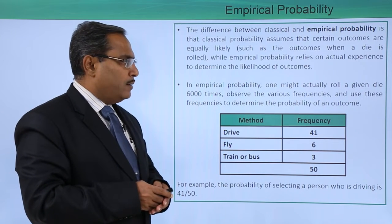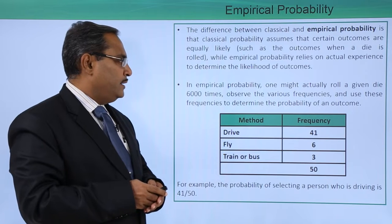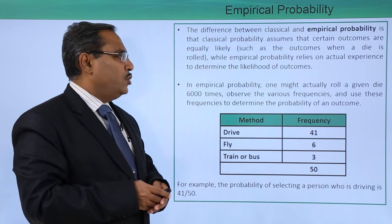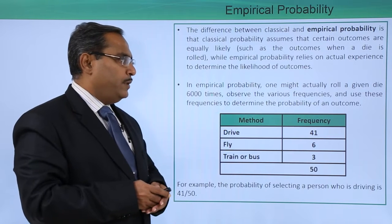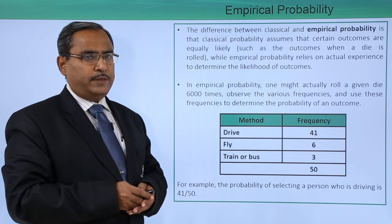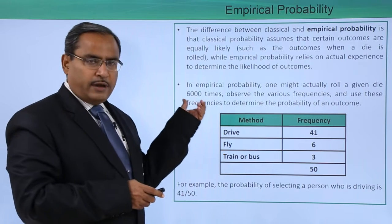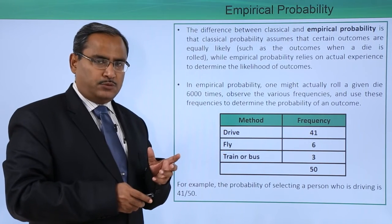In empirical probability, one might actually roll a die say 6000 times, observe the various frequencies, and use these frequencies to determine the probability of an outcome. Here a die will be rolled for 6000 number of times, might be also 10,000 number of times.